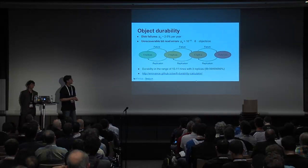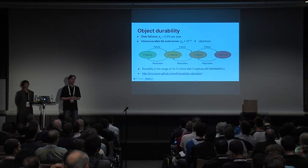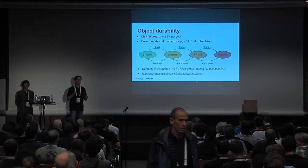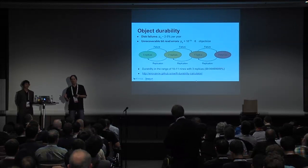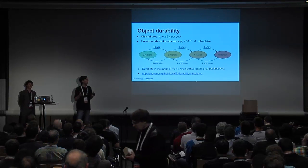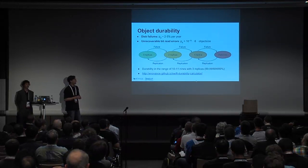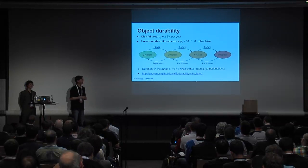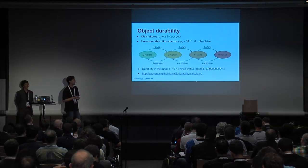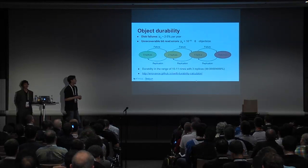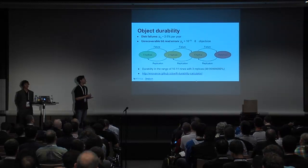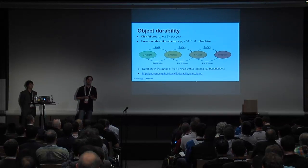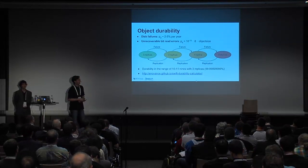If you have only two replicas left, there's also a chance of another disk failure, but the probability is much smaller because you're only looking at maybe 10 to 20 hours — the time until replication recreates the third copy. If you're unlucky and lose another disk, and if you don't let the replicators run, you might end up with data loss. Taking these numbers into account, you get a durability in the range of 10 to 11 nines within a given year for one object with three replicas.